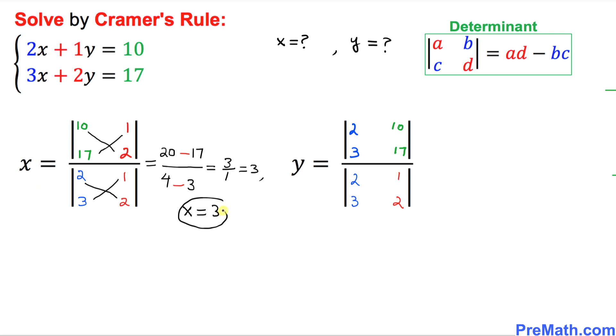So that means x equal to 3 value. Now we're going to shift our attention to y variable on the top one. 2 times 17, we're going to do the same definition. 2 times 17 is 34. Then once again, I'm going to put a minus sign before we do anything else. And 3 times 10 is 30 divided by 2 times 2 is 4 minus, then again, we're going to cross multiply the other way around. 1 times 3 is 3. So that is going to give us 4 over 1, which is equal to 4. So that means y value turns out to be 4.